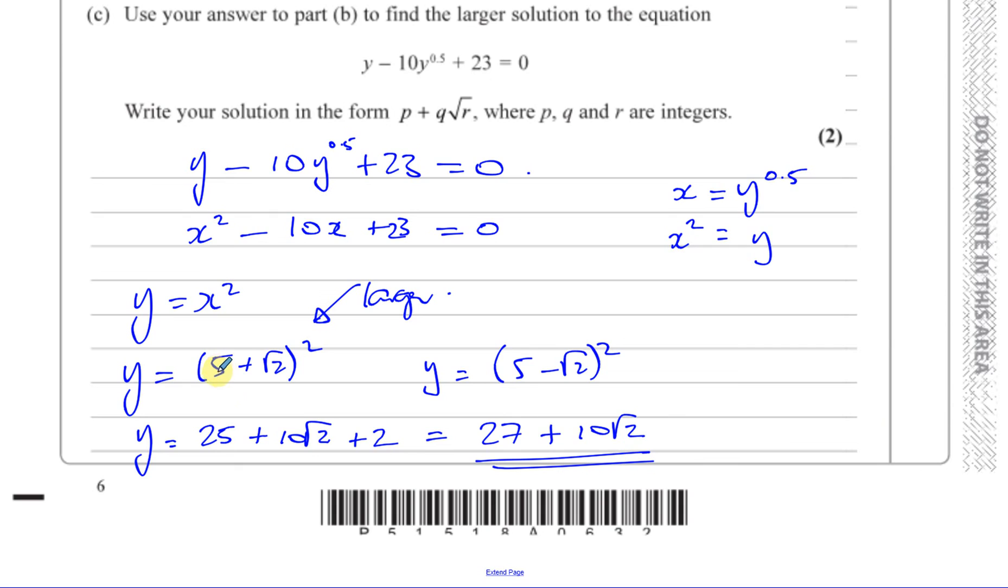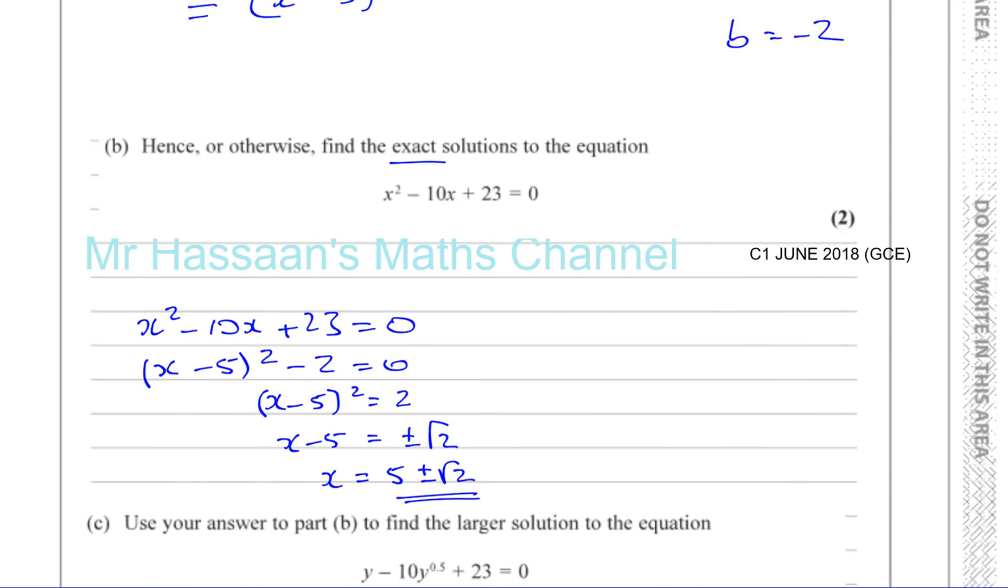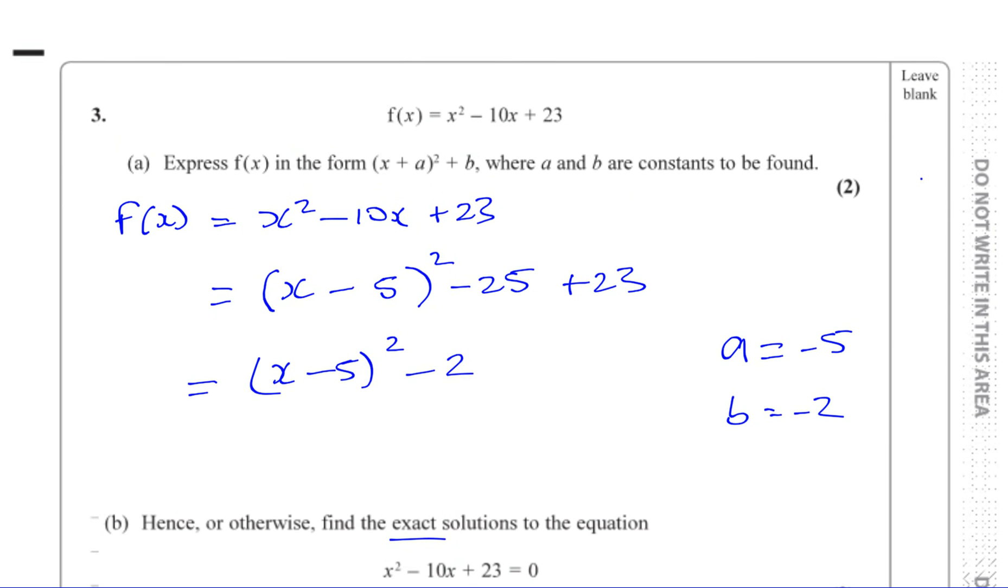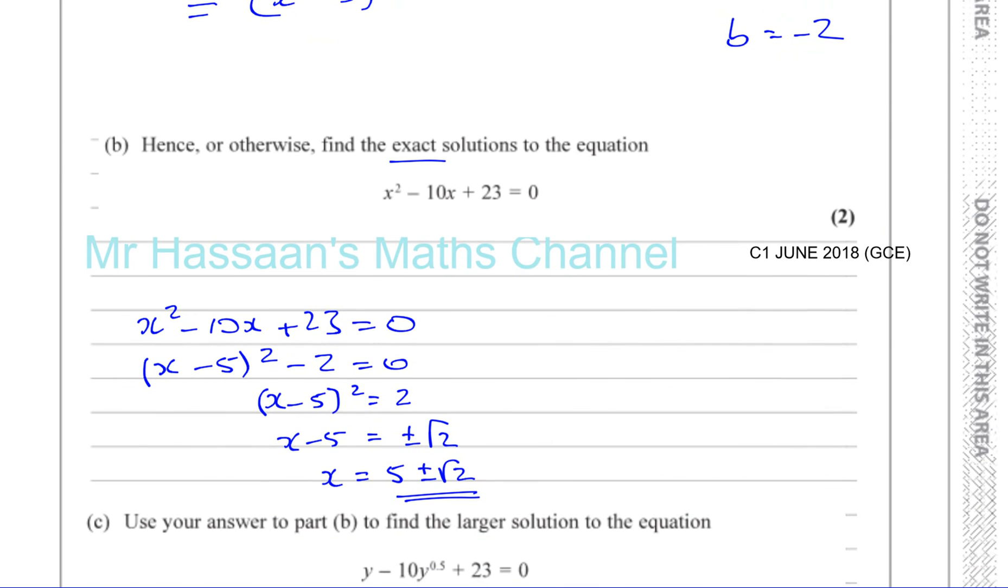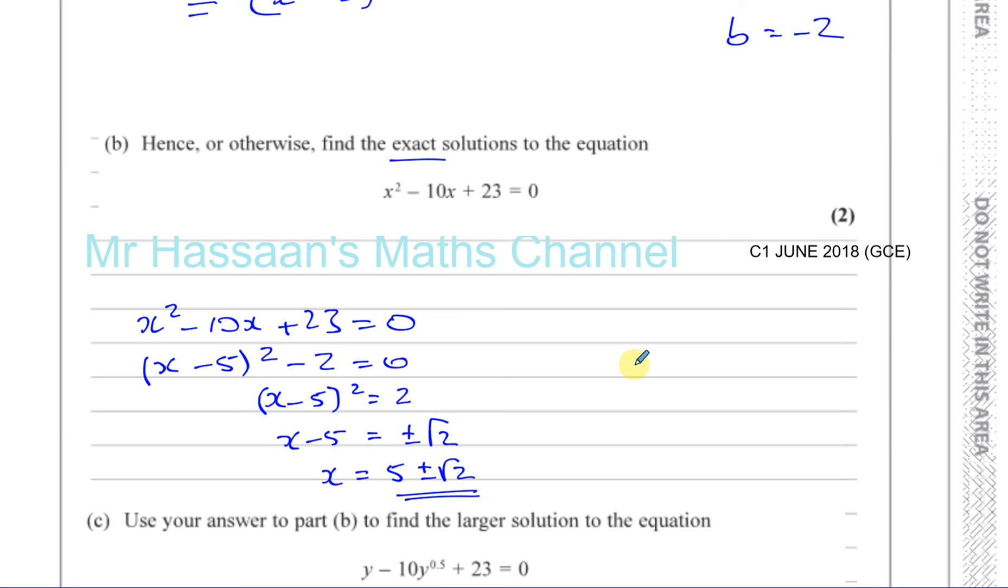So let's just confirm that. 25 plus 10√2 plus 2, 27 plus 10√2. And there we have the answer to this question, question number 3 from this paper, June 2018 C1. Or if you're doing the P1 practice paper C, this is question number 4. Thank you for watching.